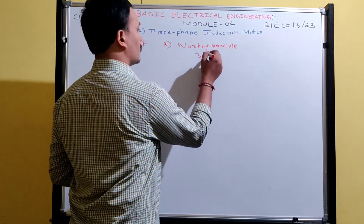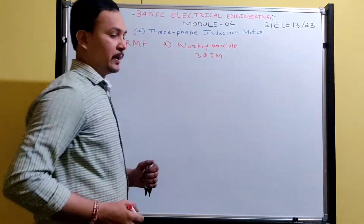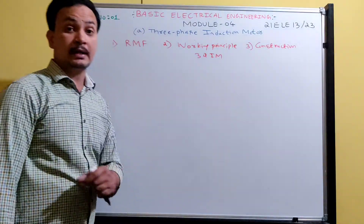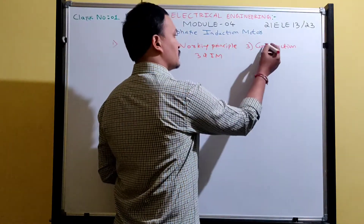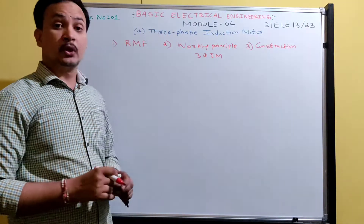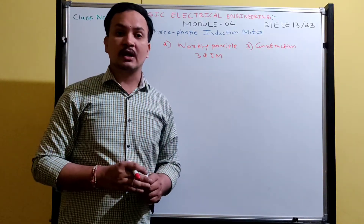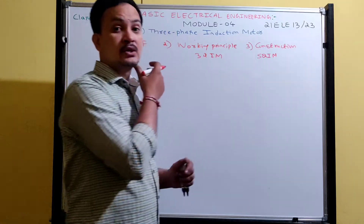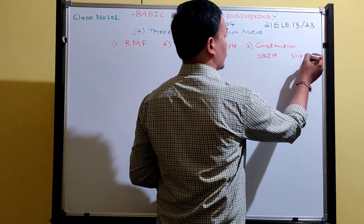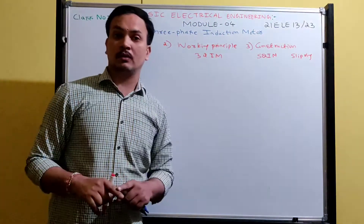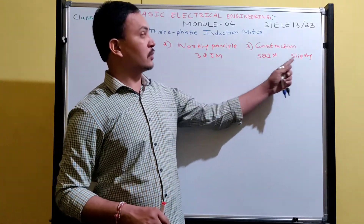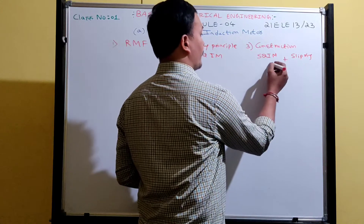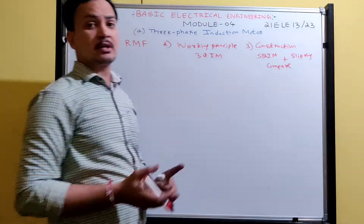After working principle, we are learning construction — constructional details of the induction motor in detail. The stator construction is common for both rotor types. The rotor and stator are the two parts of an induction motor. For the rotor we have two types: one is called squirrel cage rotor and the other is called slip ring rotor. Based on rotor construction, induction motors are classified as squirrel cage induction motor and slip ring induction motor, and we are going to learn both constructions in detail.